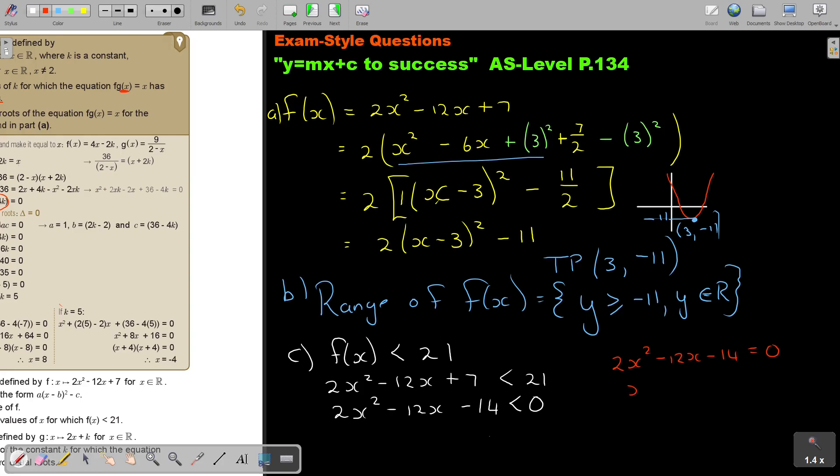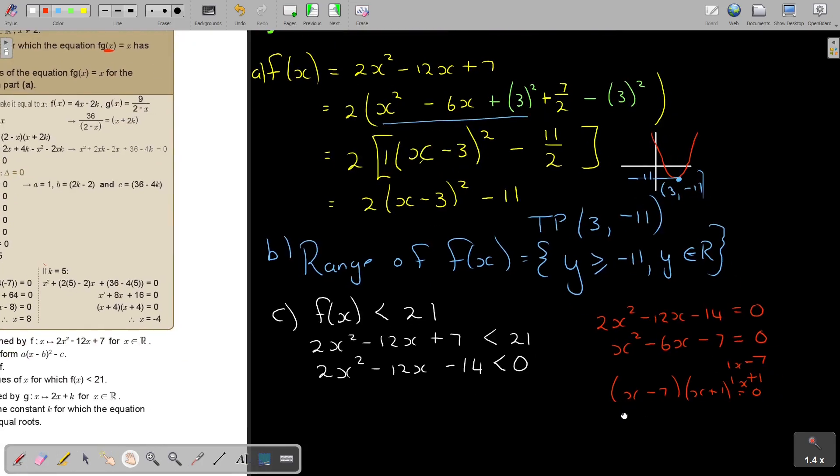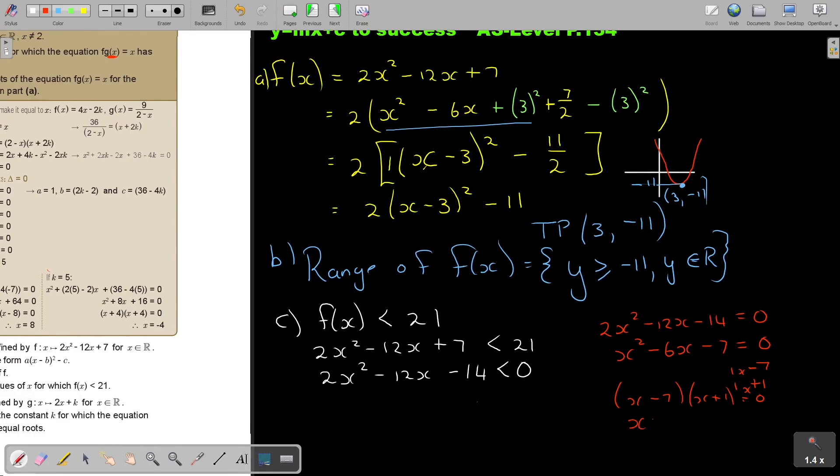You're going to say 2x squared minus 12x minus 14 equals 0. Get rid of the 2s, divide by 2: x squared minus 6x minus 7 equals 0. If I factorize, it's 7 and 1. (x - 7)(x + 1) equals 0. So x equals 7 or x equals negative 1.